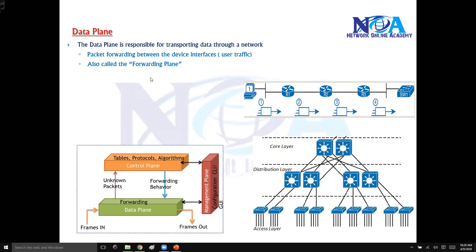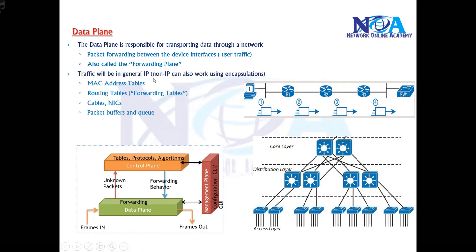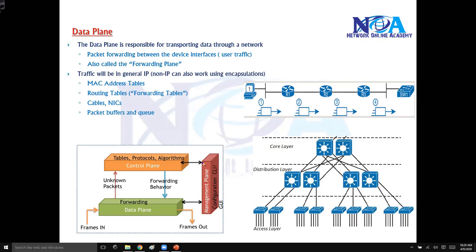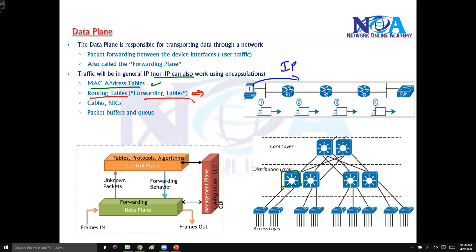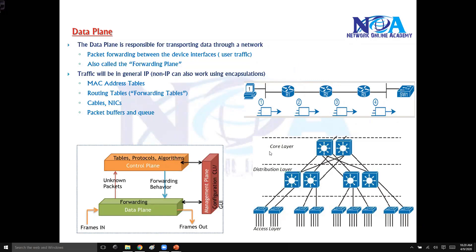There are different types of traffic: it can be general IP traffic which checks IP addresses and forwards the packet, or non-IP packets where switches check MAC addresses to forward out of a specific interface. Routing tables are also involved since they must be built to forward packets. Additionally, when packets are inside the router, it does queuing and buffering. All these individual tasks are specific to the data plane.